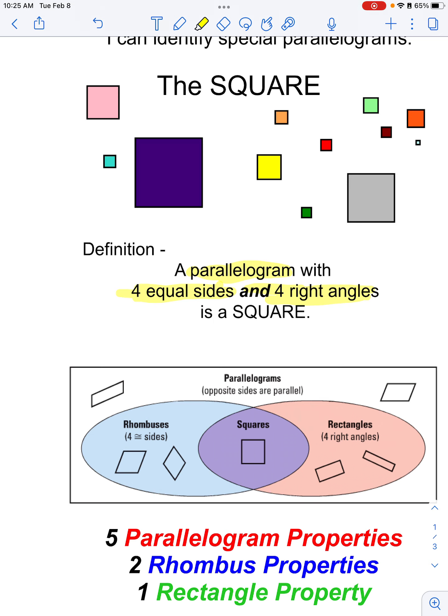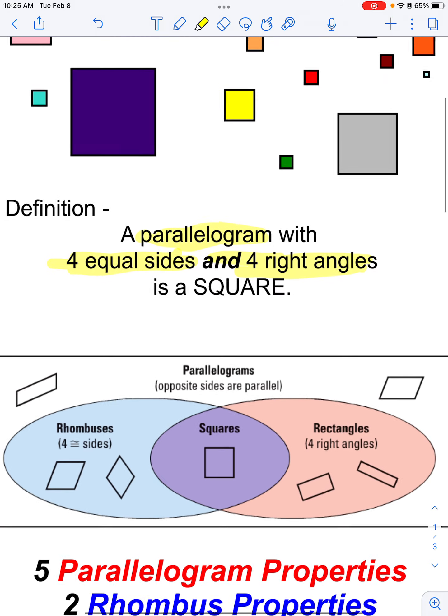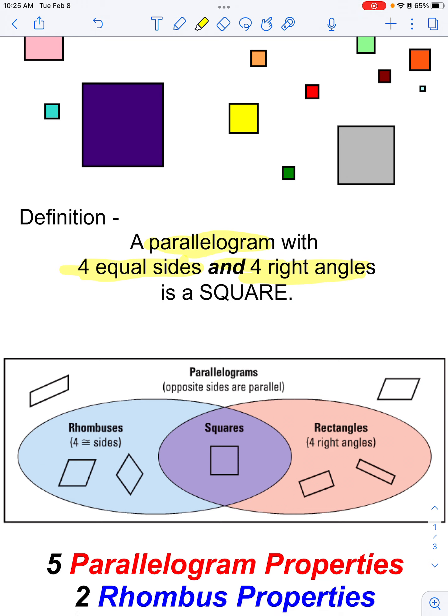So again, it's a parallelogram with four equal sides and four right angles. Mr. Larson's silly joke is that when a rhombus and a rectangle love each other very much, then they have a baby and that baby is a square.